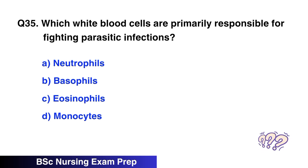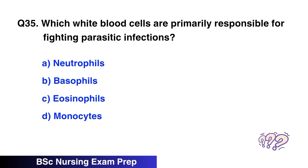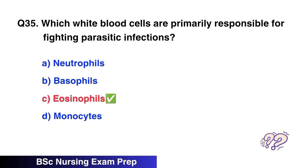Question 35. Which white blood cells are primarily responsible for fighting parasitic infections? The correct option is C, eosinophils.